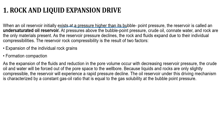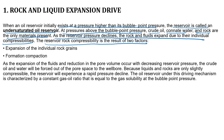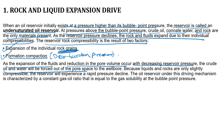When an oil reservoir initially exists at pressure higher than its bubble point, it is called an under-saturated oil reservoir. Above bubble point pressure, crude oil, connate water, and rock are the only materials present. As reservoir pressure declines, rock and fluids expand due to their individual compressibility. Rock compressibility results from expansion of individual rock grains and formation compaction, which may be due to overburden pressure.